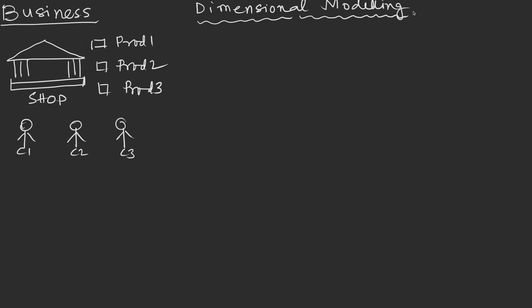The first thing we have to do in dimensional modeling is figure out which entities are the dimensions. We have products, customers, and the shop — these are all different entities that we can model as dimensions. The measures are the numerical information we need to capture, such as the amount of product customers are buying or the total revenue your shop is generating.